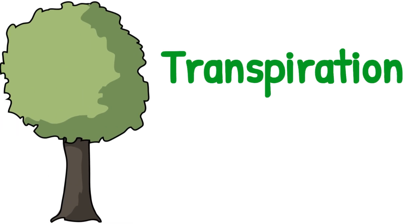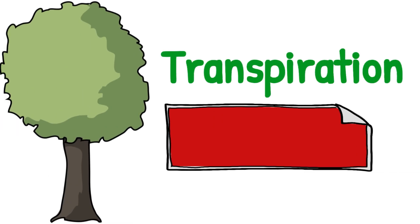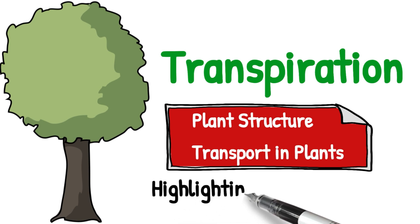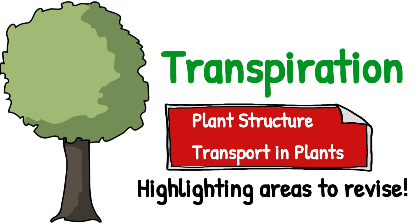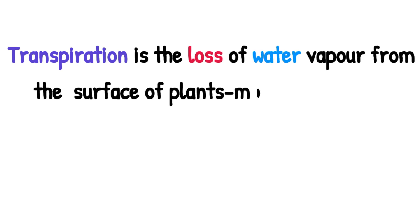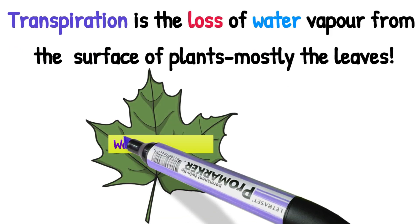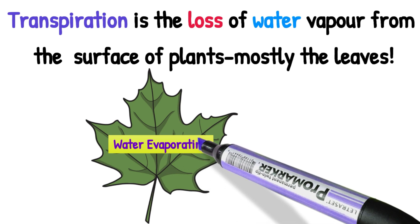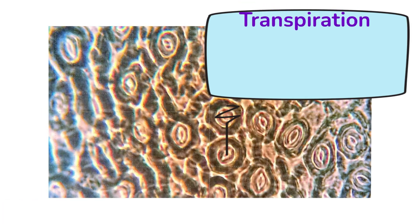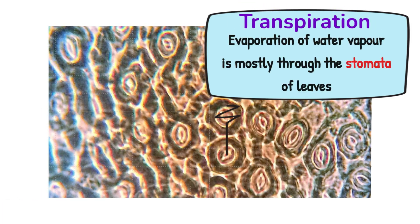Transpiration is one of those topics which is often hidden in other chapters, so this is all to do with plant structure and transport in plants. It's particularly important — you could get a question on it in your exams, so this video is just highlighting areas to revise, all part of Leaving Cert Biology. Transpiration is the loss of water vapour from the surface of plants, mostly the leaves, so it's really the evaporation of water, mostly taking place from the aerial parts of the plant. This evaporation takes place through tiny pores in the leaf known as the stomata.